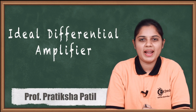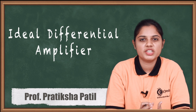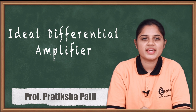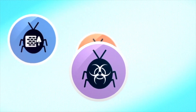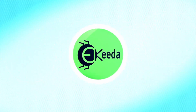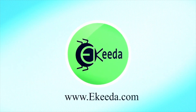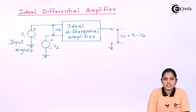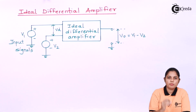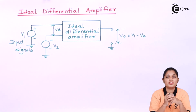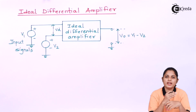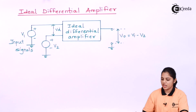In this video we are going to see the different types of operational amplifier — specifically the differential amplifier, or ideal differential amplifier. We have studied that an operational amplifier has two inputs; it is a dual input, single output device, and it can be utilized as a differential amplifier.